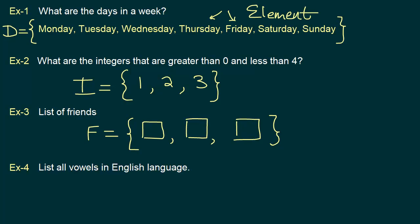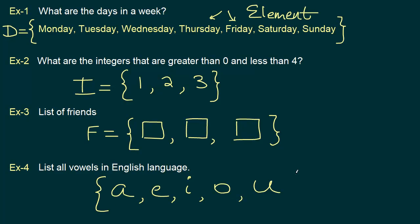Now let's take a look at one final example: the list of all vowels in the English language. We know the vowels are A, E, I, O, U. These are the elements that belong to our set. Let's separate them by comma, and put a starting curly bracket and an ending curly bracket to mark the beginning and ending of our set. Because these are vowels, let's say uppercase letter V represents our set.